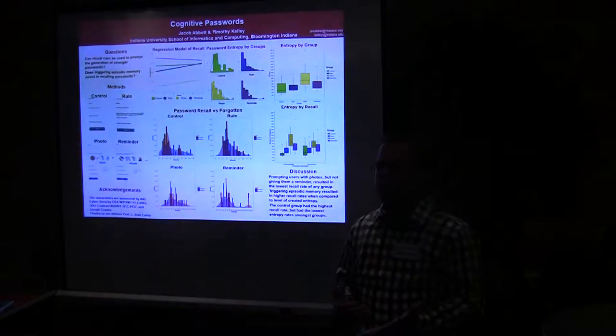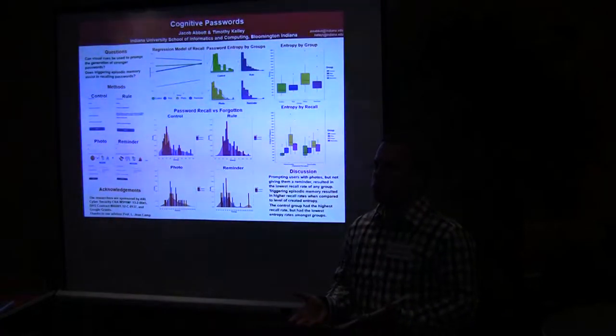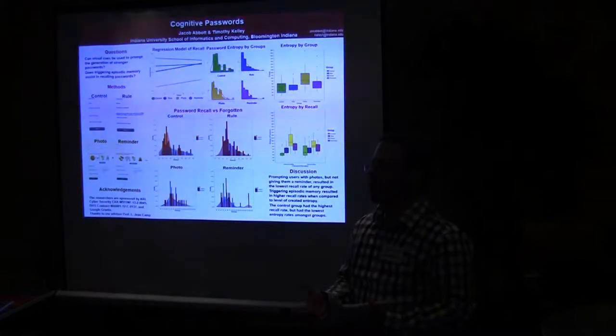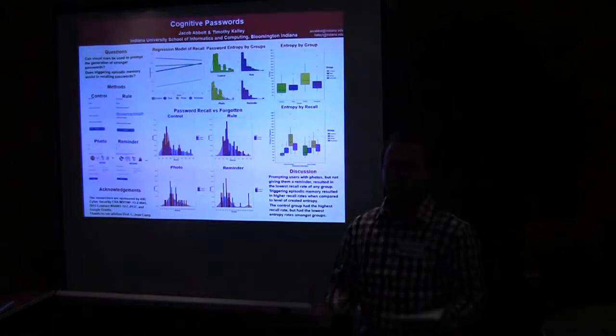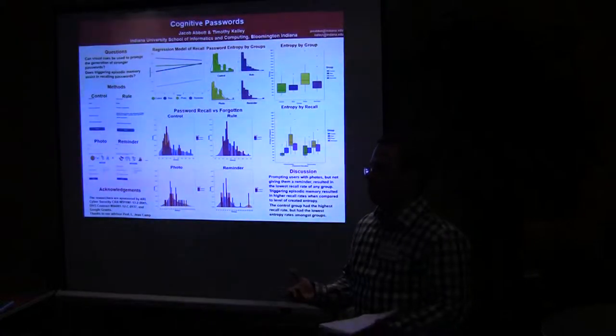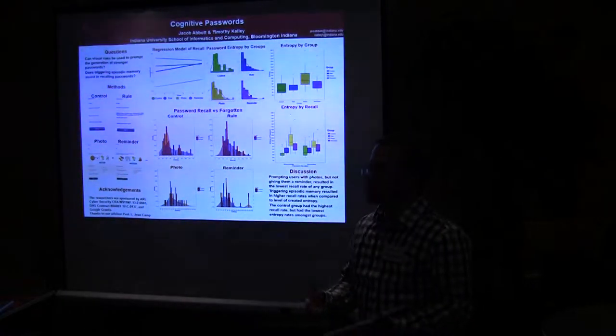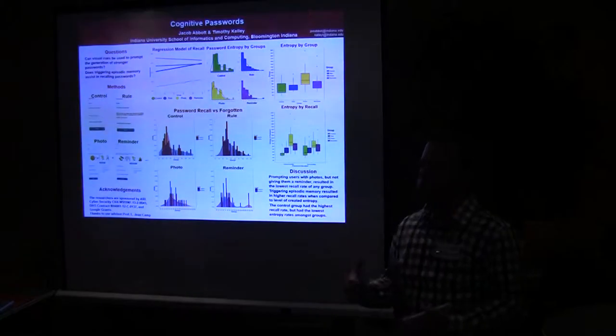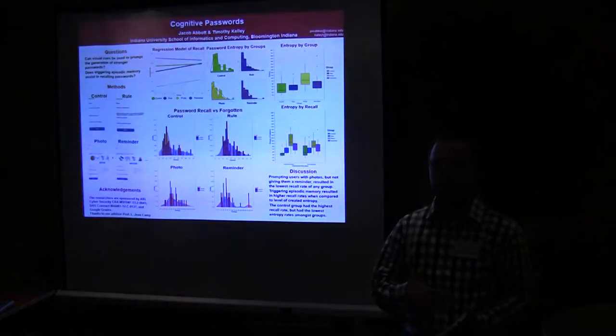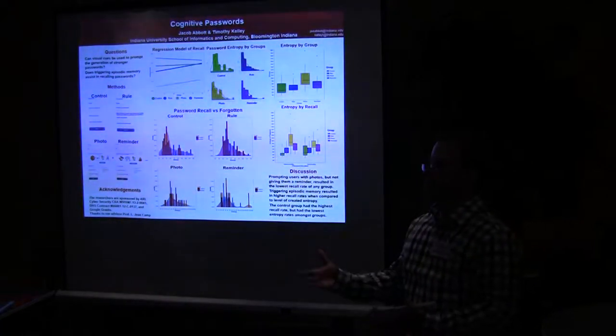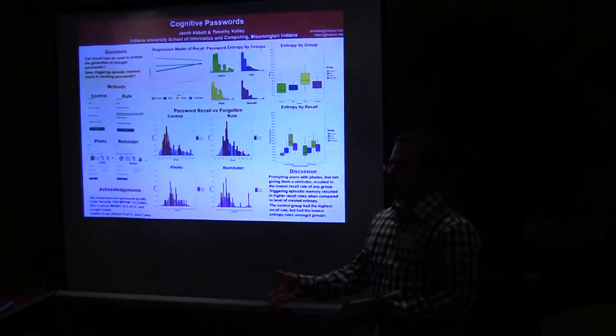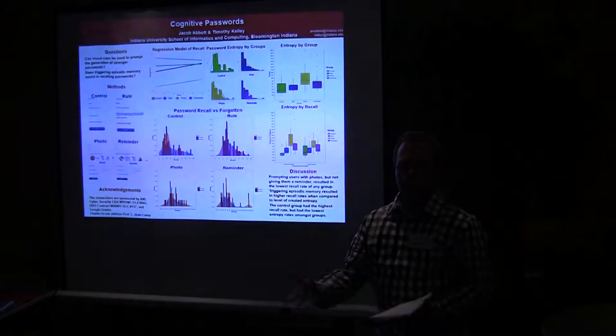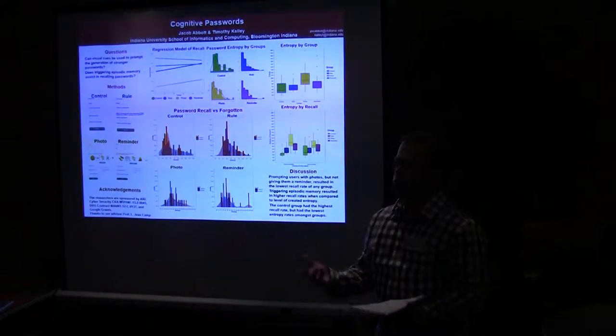What we were looking at is seeing if we could actually use visual cues to trigger episodic memory to help in people's recall passwords, so that way they could actually remember the passwords they created and that way they're actually usable for them. We also wanted to see if we could use the visual cues to cause them to actually create stronger passwords beyond just if we required a normal rule of lowercase, uppercase, special character, and a digit.